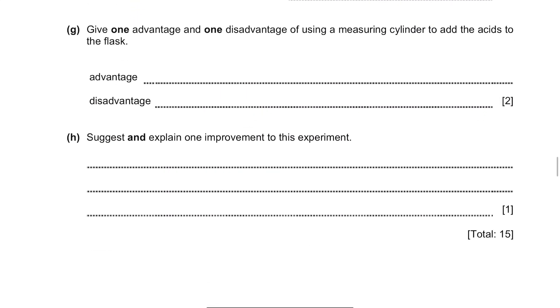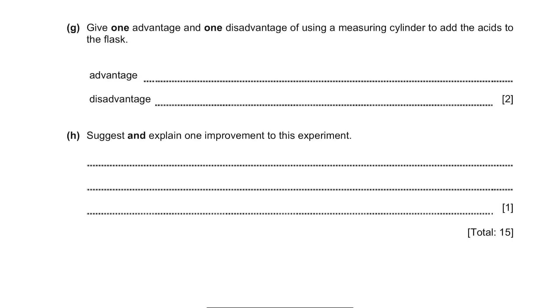Part G. Give one advantage and one disadvantage of using a measuring cylinder to add the acids to the flask. The advantage is that flasks are easy to use and the procedure is quick. The disadvantage is that the measurement will be much more inaccurate when compared to burette or pipette.